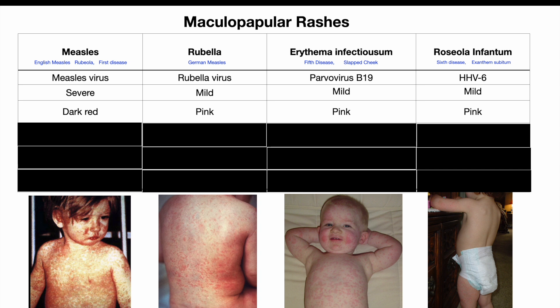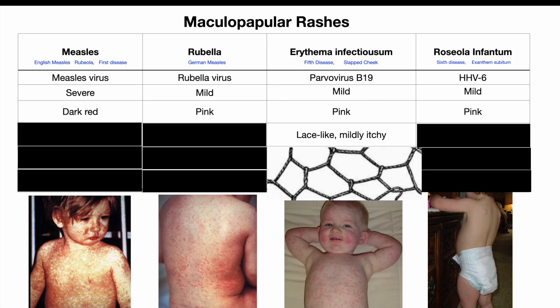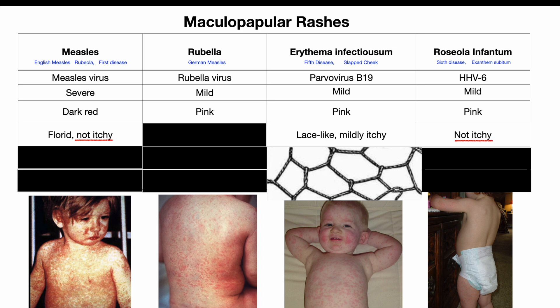So far we have two good clues to help us distinguish measles from the remaining three viral exanthems. What we need now is more specifics to tell apart rubella, erythema infectiosum and roseola. When we look at the rash in more detail, the rash of erythema infectiosum is a bit more lace-like in pattern, whereas the rash of measles is very florid and very dense. Also, the measles and roseola rashes are not very itchy at all, whereas rubella and erythema infectiosum can be mildly itchy.